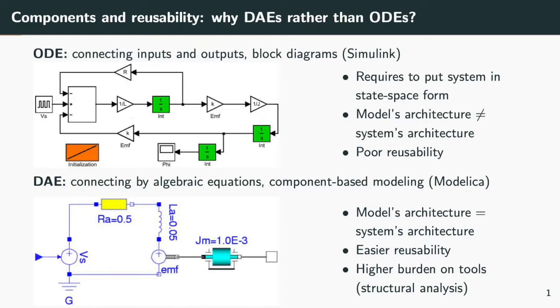ODE-based component models are difficult to reuse. On the contrary, differential algebraic equations, or DAEs, make modeling and reusability much easier. Component interconnection is done by adding algebraic equations. It is possible to reflect the systems architecture in the model, and this enables a component-based modeling philosophy advocated, for instance, in the Modelica community.